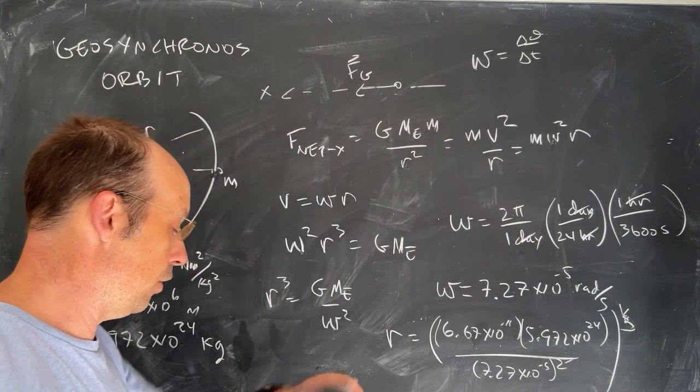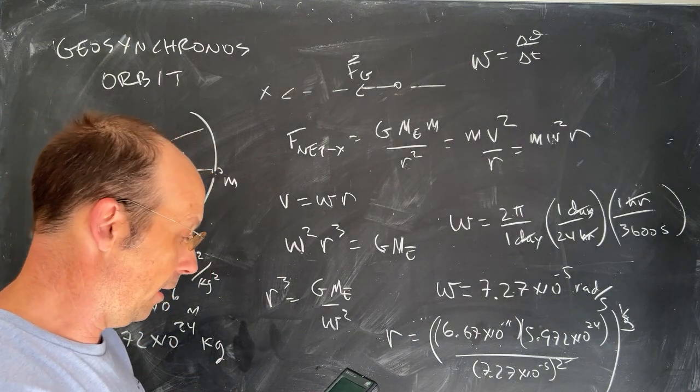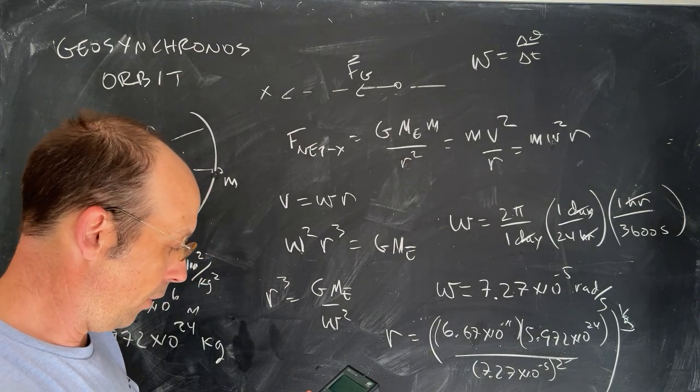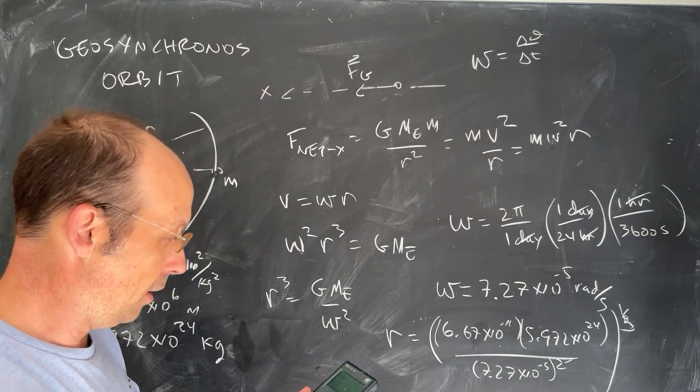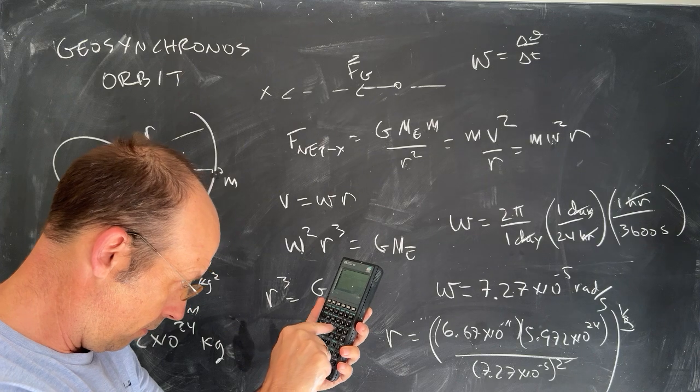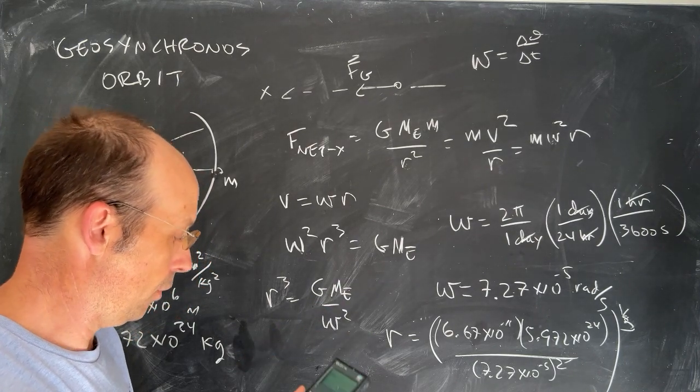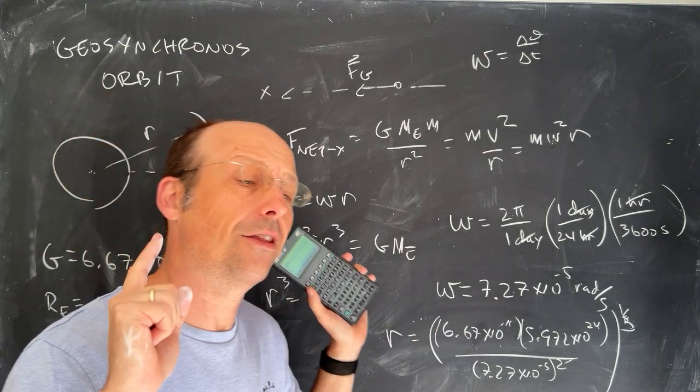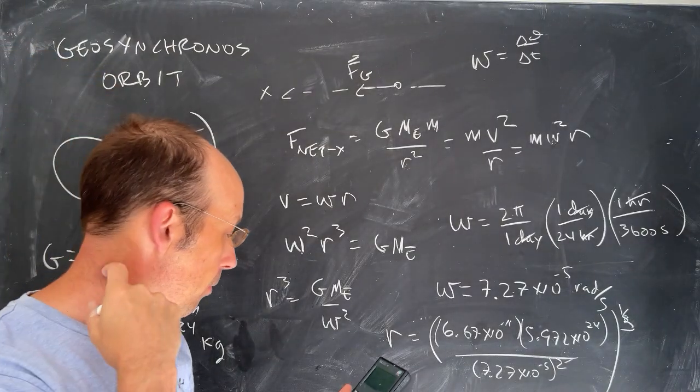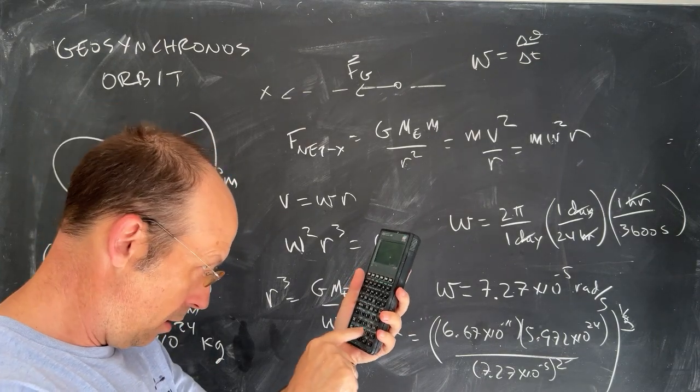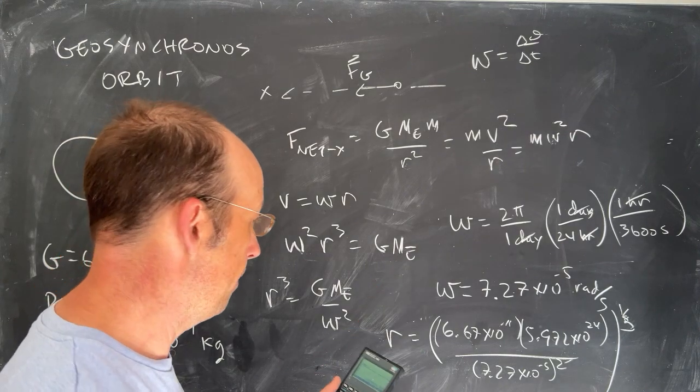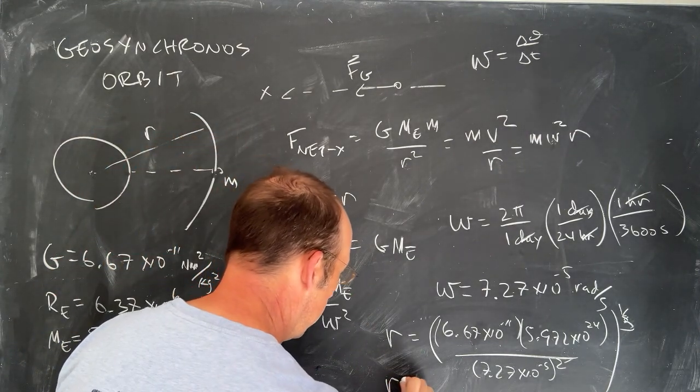Okay, so we've got a lot of work to do with our calculator here. Make sure that you practice that and you can do it right, because there's a very good chance that you can make a mistake. I'm just going to start over. 6.67 times 10 to the negative 11th times 5.972 times 10 to the 24th. Now I need to square that. 7.27 times 10 to the negative fifth squared, divided by, and then I need to raise it to the one-third power. I have an x to the y button. I think I'm going to do 3 and then xy. So I get r, which you can't see.